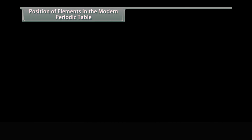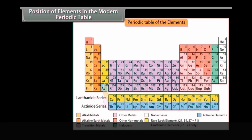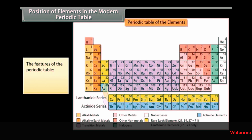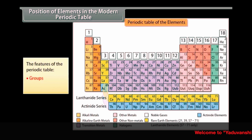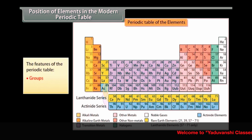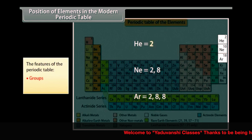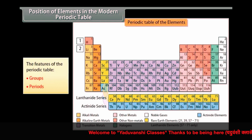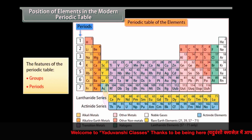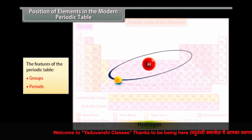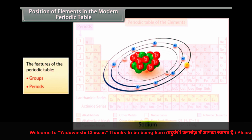The most commonly used periodic table is the long form of the modern periodic table. The periodic table has 18 columns called groups. The extreme left elements contain alkali elements and the extreme right elements contain noble gases. All elements in a group have similar electronic configurations and the same number of valence electrons. The seven rows in the periodic table are called periods. In each period, a new shell fills up, and the period number is also the number of the shell which starts filling up.